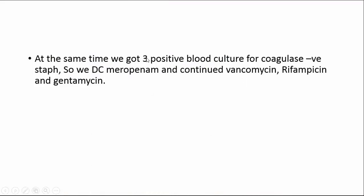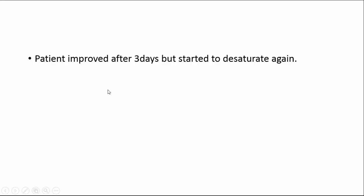At the same time, we got three positive blood cultures for coagulase-negative staph. Now we have a clear picture: a patient with infective endocarditis leading to acute severe aortic regurgitation. She also had valvular lesions including moderate mitral and tricuspid regurgitation. This patient had acute valvular lesion with flash pulmonary edema and sepsis due to coagulase-negative staph. We stopped meropenem, which mainly covers gram-negative organisms, continued vancomycin, and added rifampicin for full coverage of the staph organism. The patient improved for three days but then started to desaturate again.